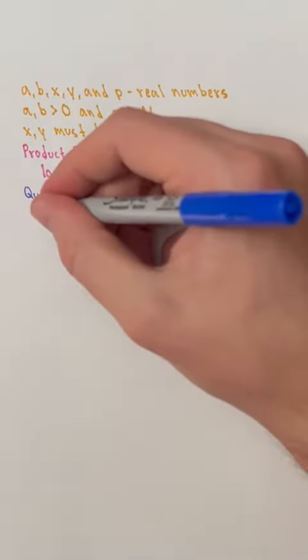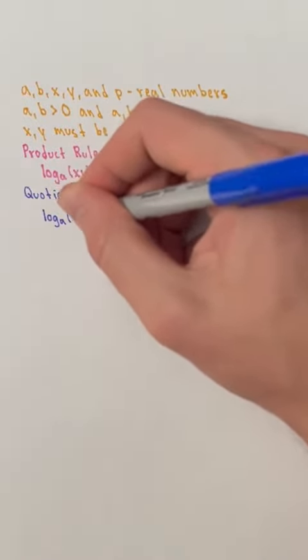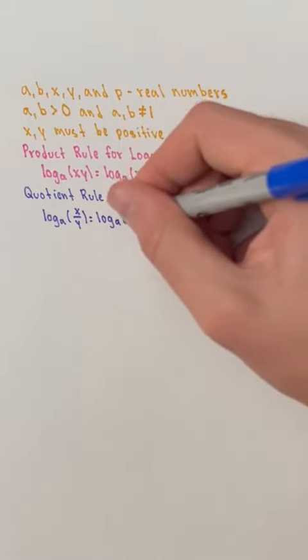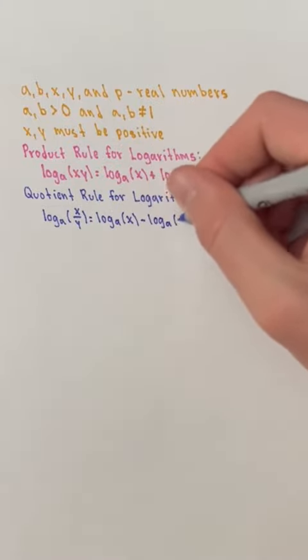The quotient rule for logarithms states that the log base a of x over y is equal to the log base a of x minus the log base a of y.